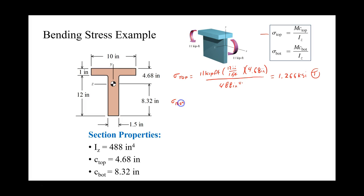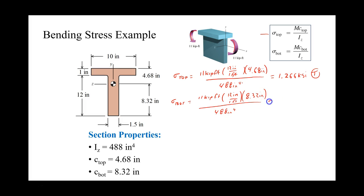At the bottom surface, we do the same thing but change our value of c. So it will be 11 kip-feet times 12 inches per foot, times 8.32 inches, divided by 488 inches to the fourth power — giving 2.25 KSI. From our graphic, the bottom surface is in compression. The surface furthest from the neutral axis always has the higher stress, which is why we see the highest stress at the bottom surface in compression.